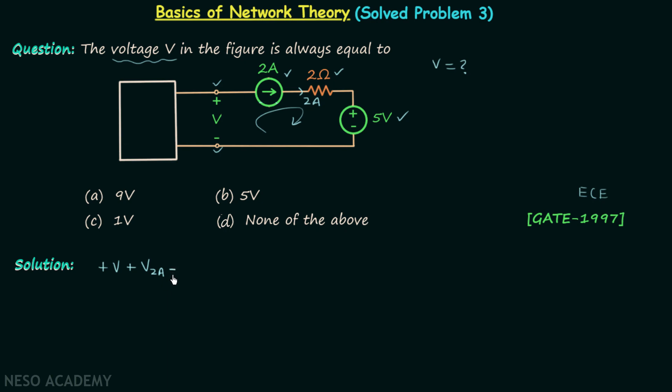We will have minus because this will be the polarity. In the direction of current the potential will decrease due to the resistor. Therefore we have plus then minus, representing that the potential is decreasing in the direction of current when we move through the resistor.